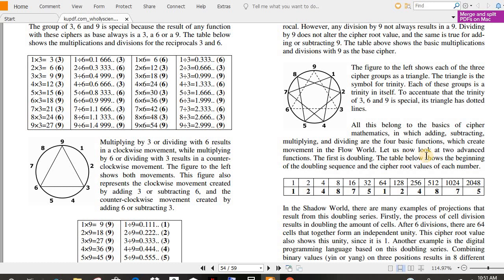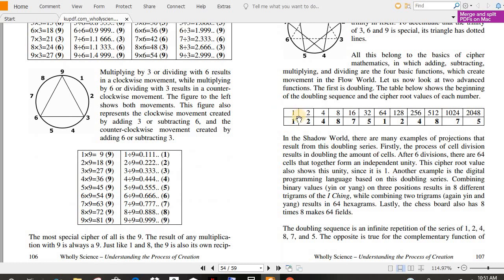Let us now look at two advanced functions. The first is doubling. The table below shows the beginning of the doubling sequence. This is where it starts to get really cool. And the cipher root values of each number. So one, one is two. Two, two is four. Four and four is eight. Eight and seven, 16 goes all the way up, which is, this is binary. This is computer code.